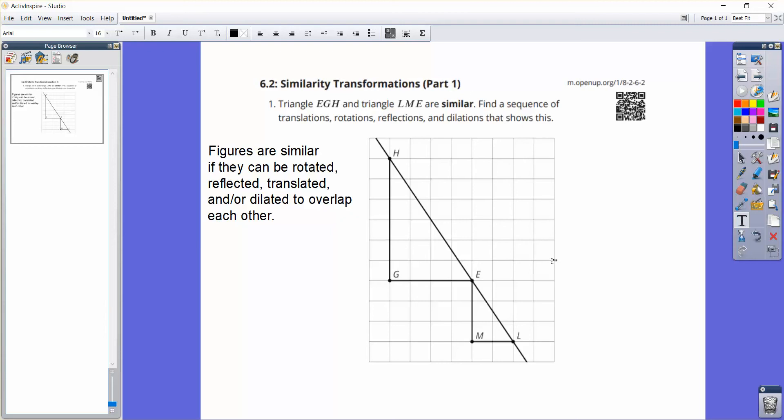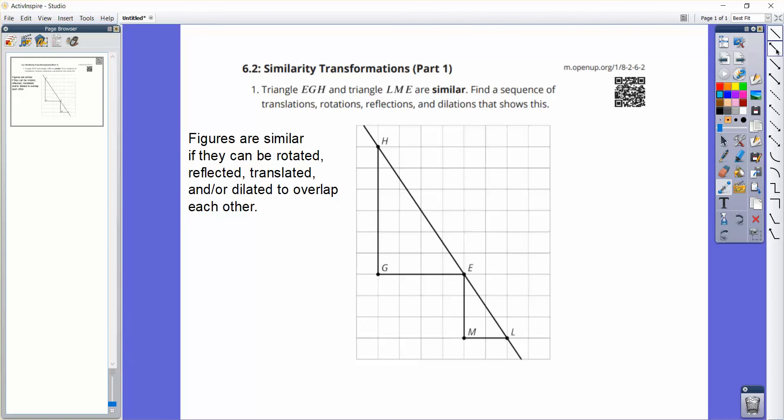Here we have on this screen one of the student-facing task statements from Lesson 5 from Unit 2 in the 8th grade curriculum. You have two triangles, HGE and EML, so that you have one point in common. The goal here is to show that they can be similar. So what sequence of transformations or dilations, reflections, whatever, can take these figures onto each other? First off, we can see that we have two triangles, one smaller than the other, so clearly there's a dilation that's involved.